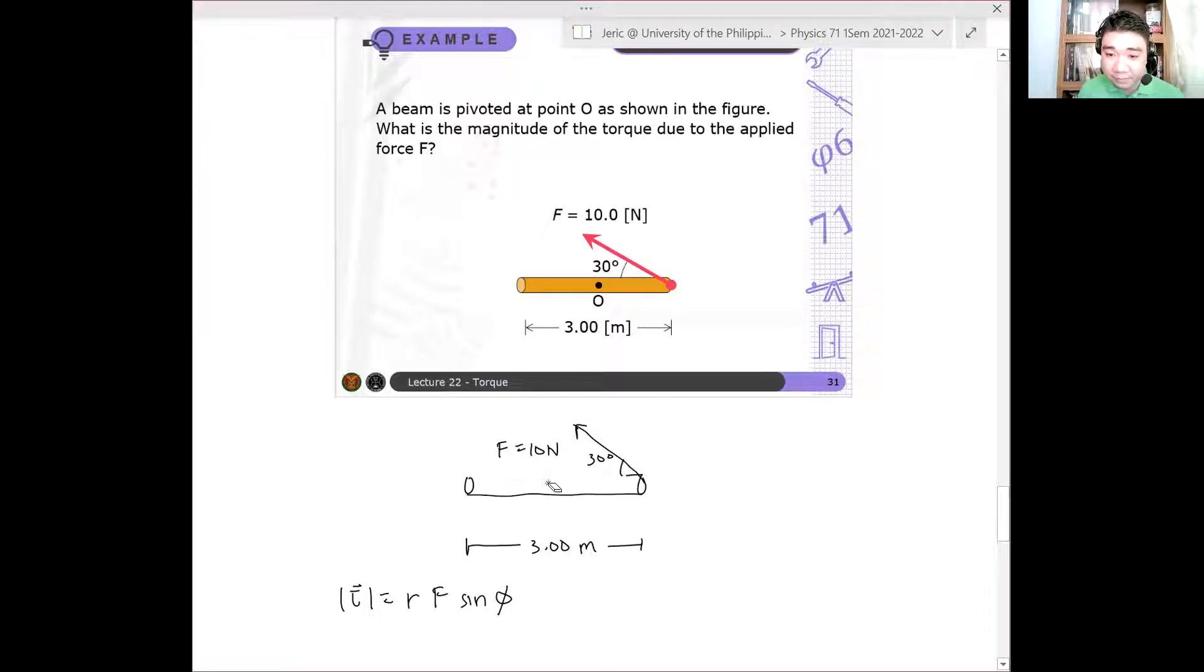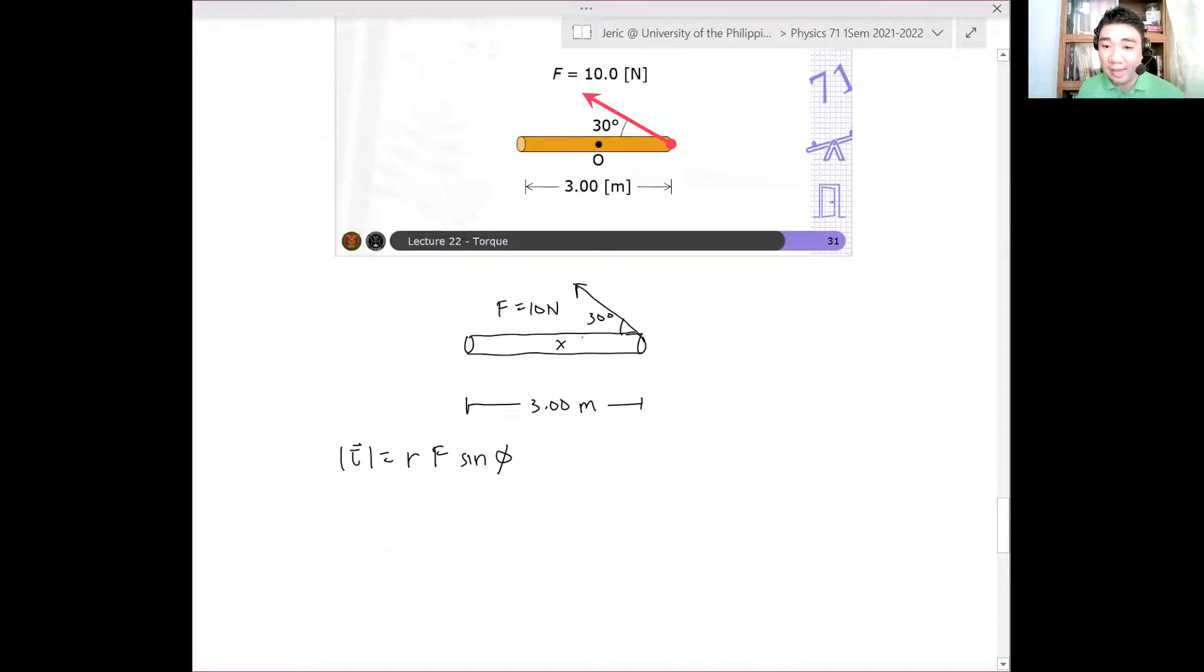Ay, sorry. Okay, so this is, that is the rotation. So what I will do again is to extend this length here. So I'll explain this. I'll draw a dashed line there. And then the angle that we want is not this 30 degrees, but rather this angle here.